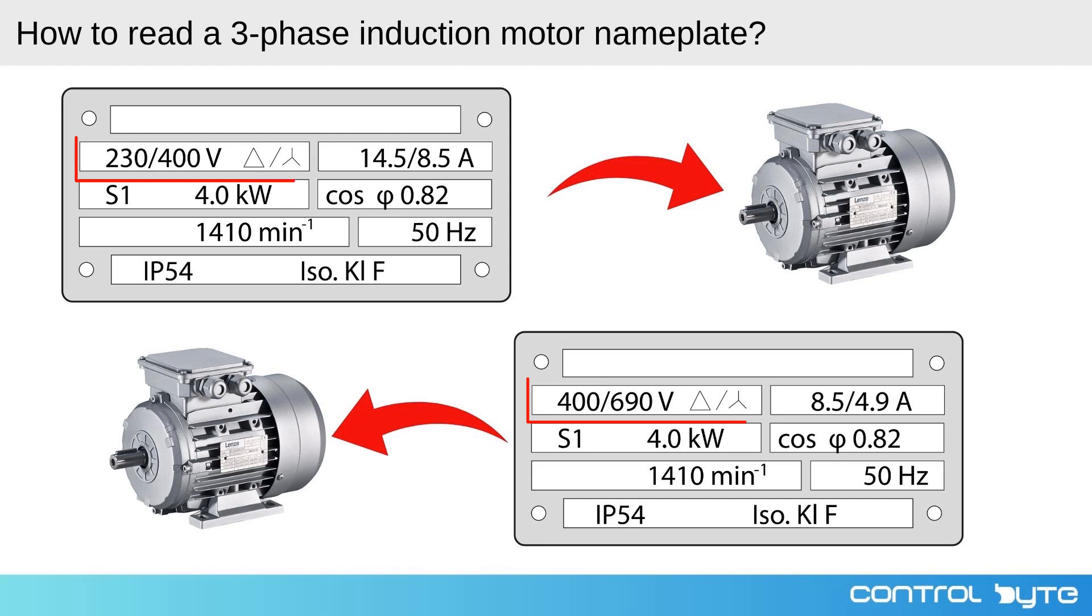The first parameter on the nameplate is voltage. This indicates the electrical potential that the motor is designed to operate at. For a three-phase induction motor, you will typically see two voltage ratings like 230/400 volts or 400/690 volts.